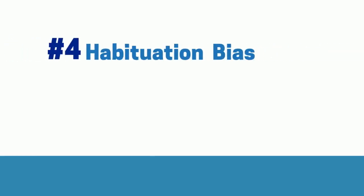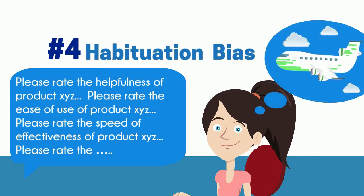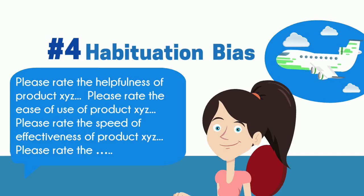4. Habituation Bias. When a series of questions are worded similarly or use a similar structure, respondents tend to answer in a less engaging way. Many spot the pattern and go on autopilot to get through the survey with minimal energy. This adversely affects data quality, as respondents do not give each question the consideration it deserves.